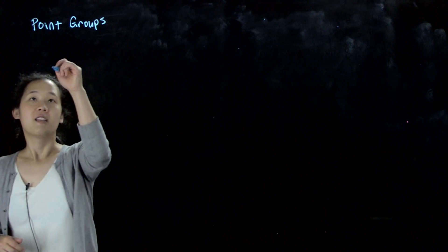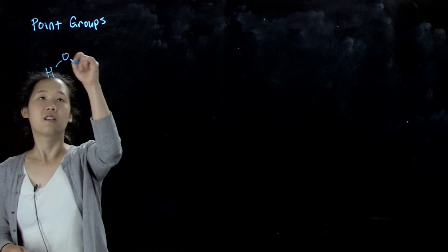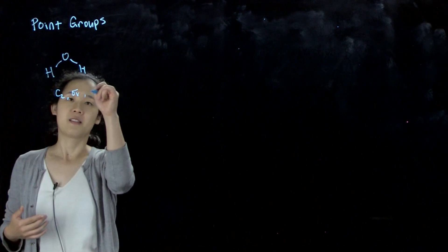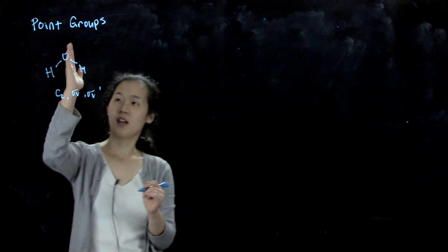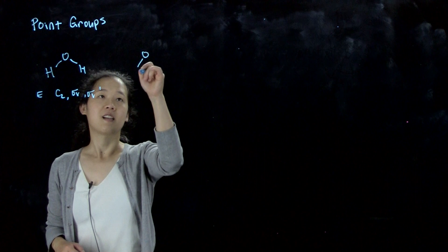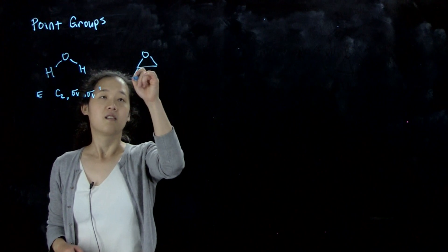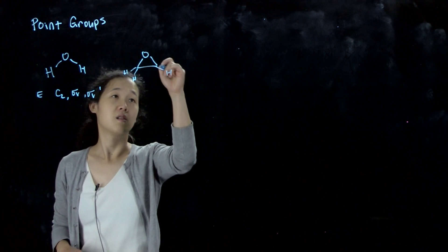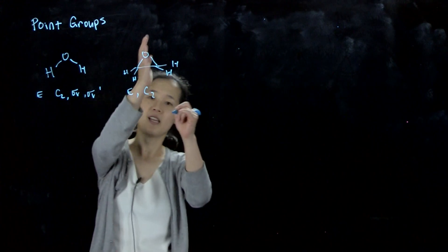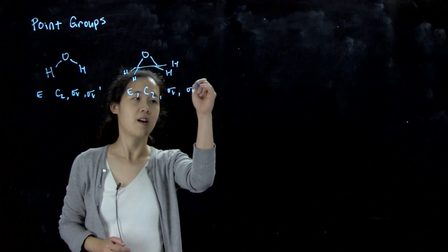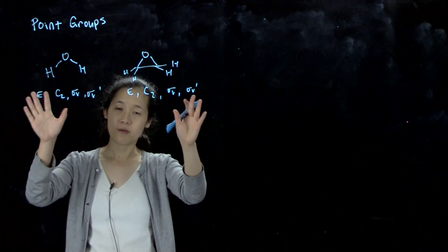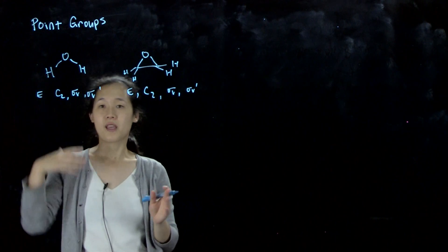One example is water. Water has a C2 axis, sigma V in a plane, sigma V prime going into the board, and also E. Then we also have something like ethylene oxide. This also has E, a C2 down this axis, sigma V, and sigma V prime. Because the complete list of symmetry operations for these two molecules is identical, they're in the same point group.